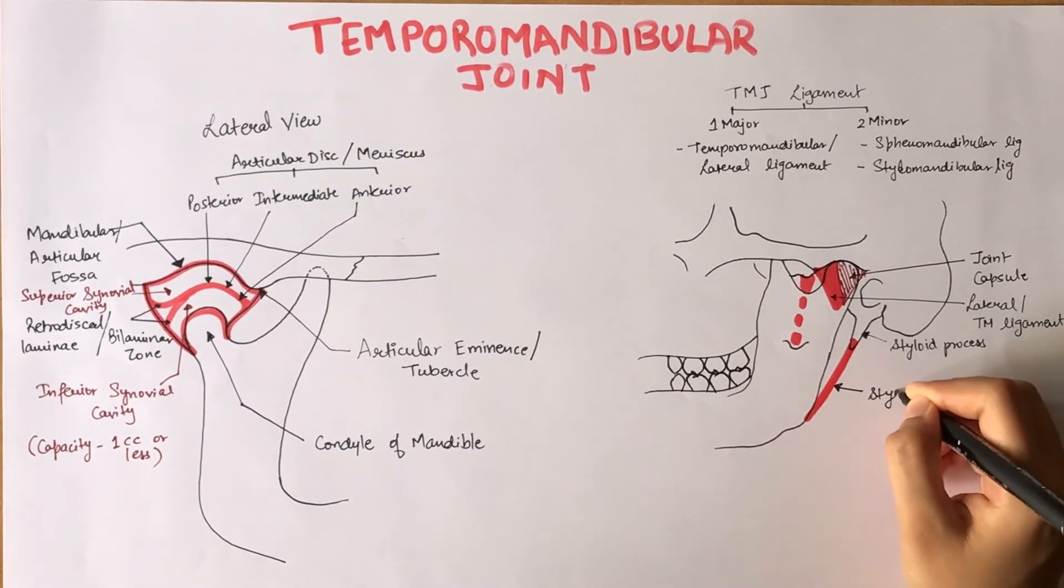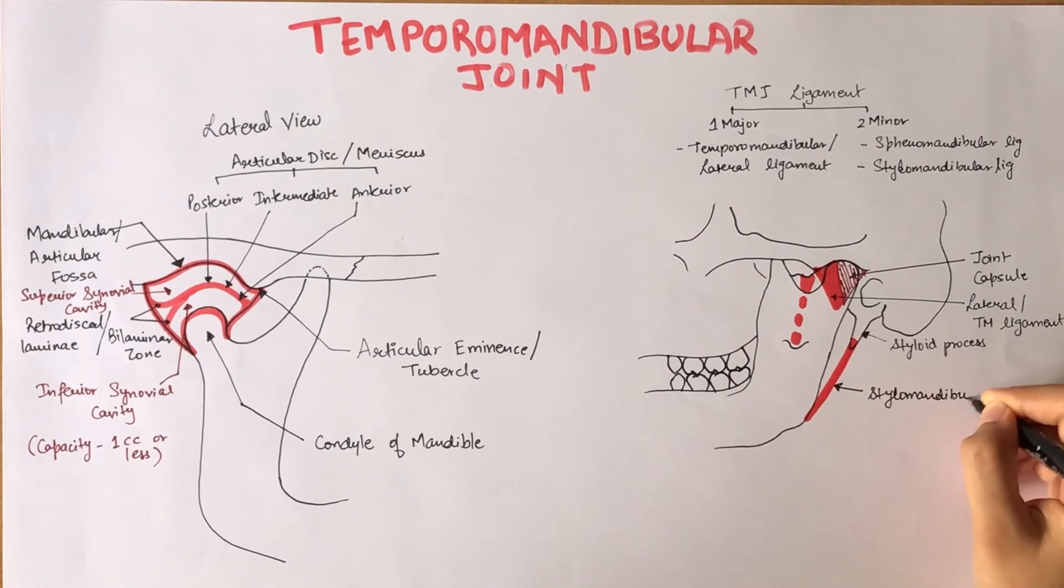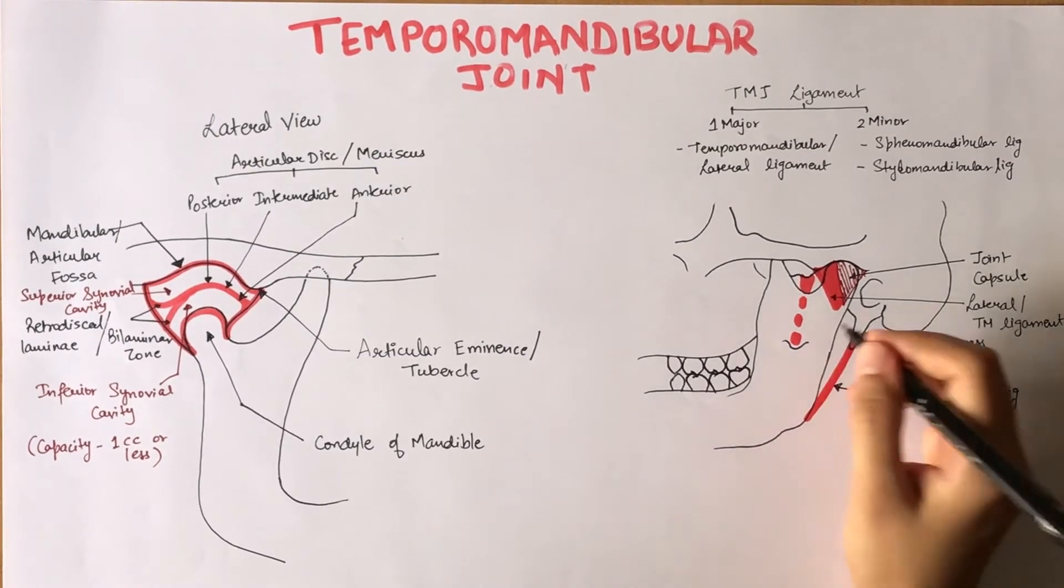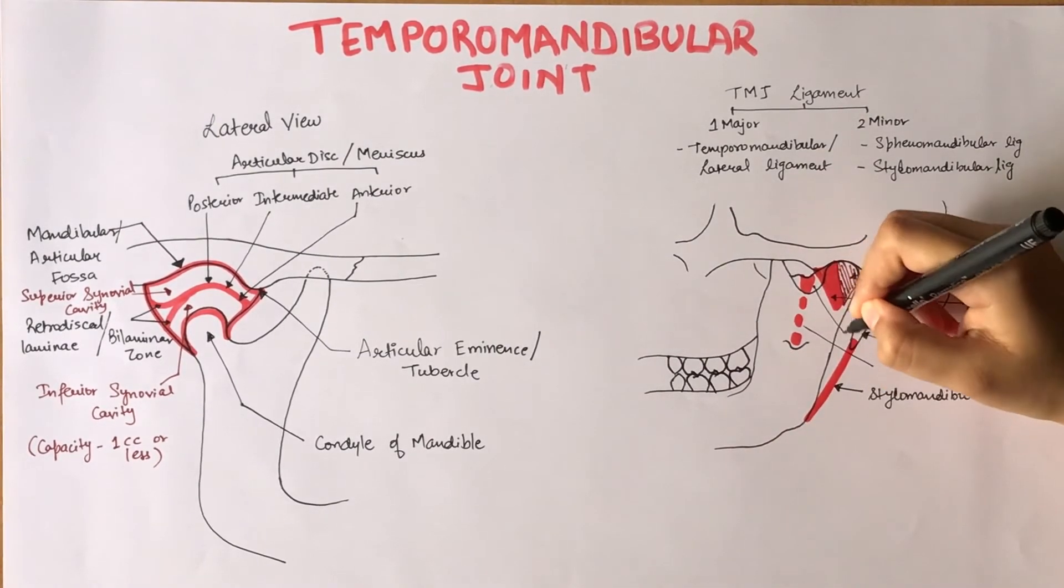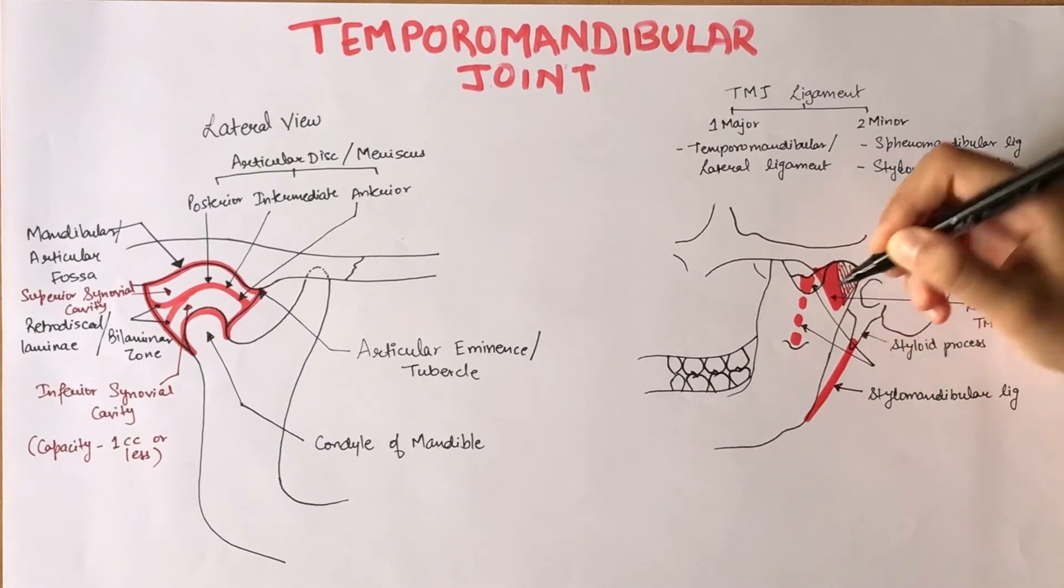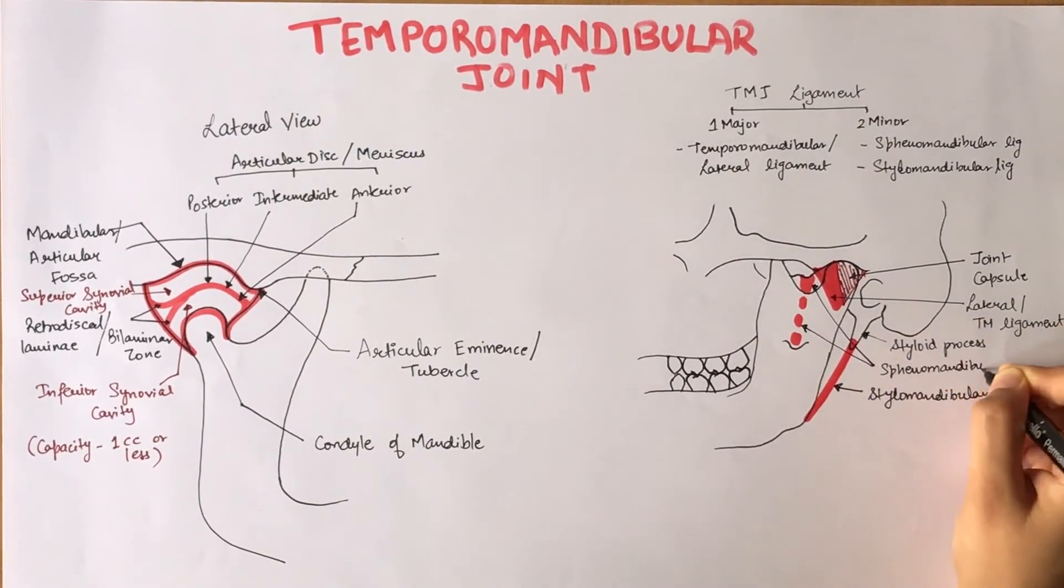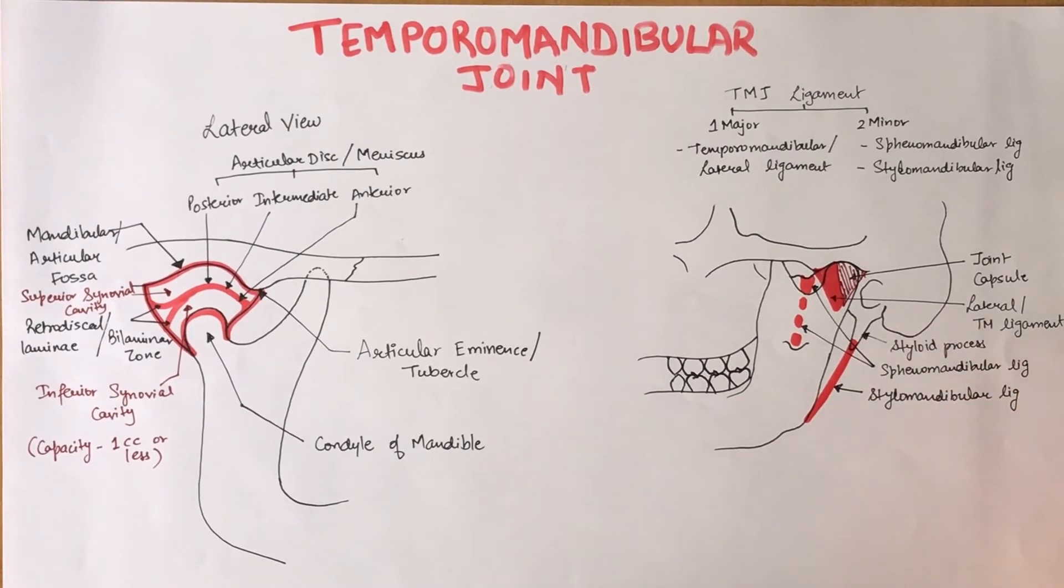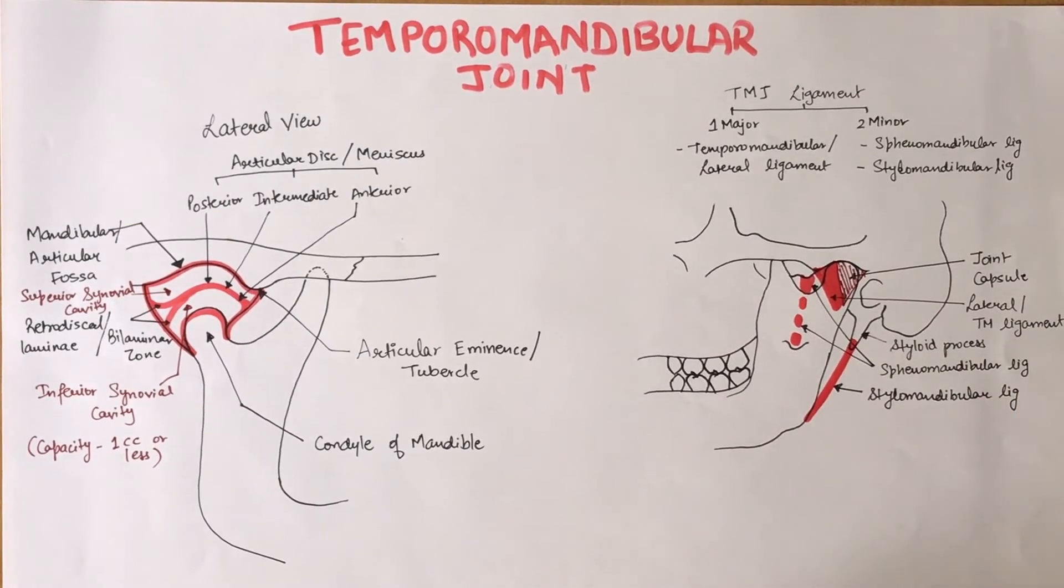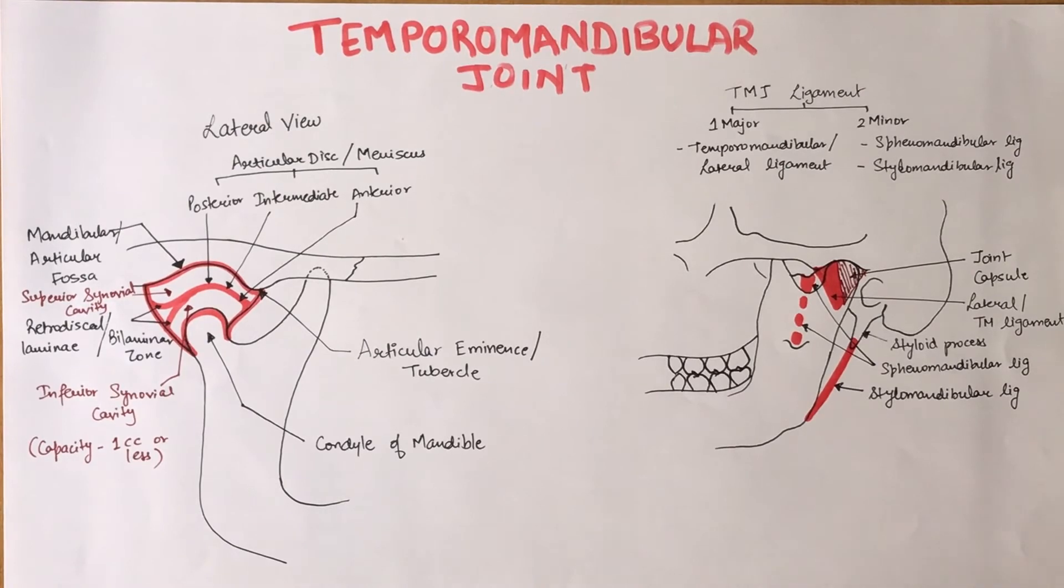Both the minor ligaments, that is the stylomandibular and the sphenomandibular ligaments, become taut when the mandible is protruded, that is moved forward. These ligaments are very important as they define the border movements or in other words, the farthest extent of the movements of the mandible. Movements past these borders are rarely achieved in a normal function.